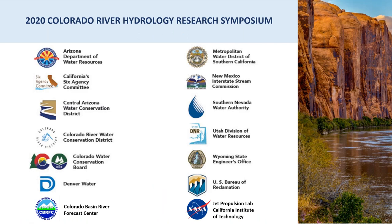I want to bring to your attention the Colorado River Climate and Hydrology Work Group as represented by the icons on this slide. This group represents membership from across the seven Colorado River Basin states as well as large water utilities and federal partners such as the U.S. Bureau of Reclamation, the Colorado Basin River Forecast Center, and NASA. This group has been around for a few years — you might remember participating in a symposium in Las Vegas in 2017.